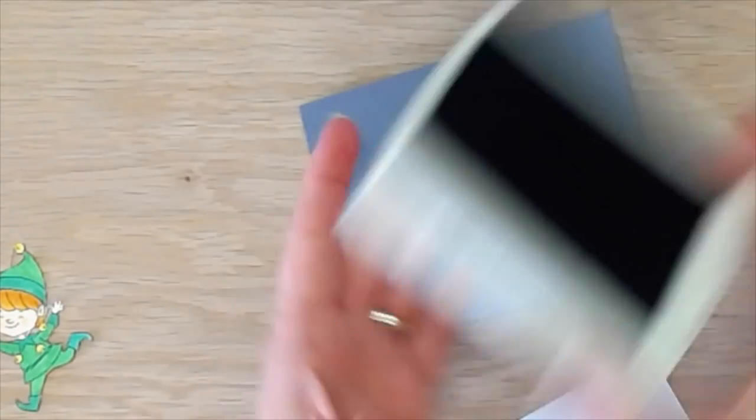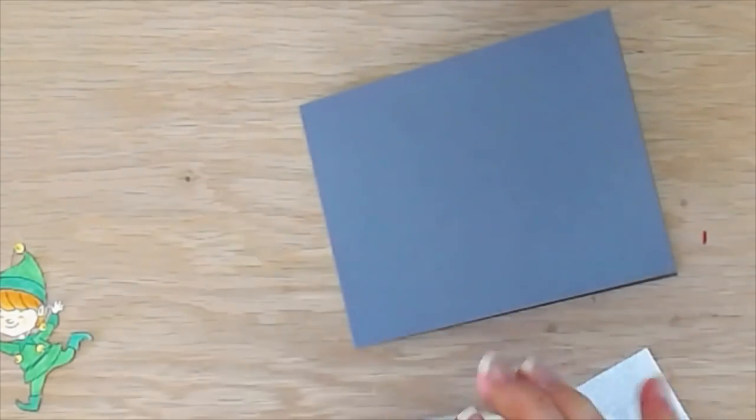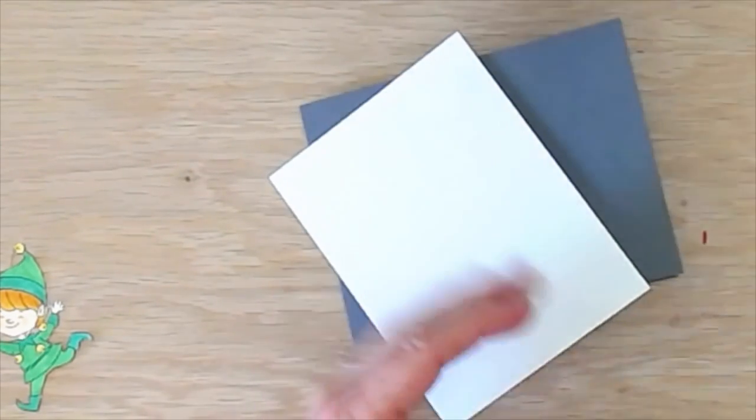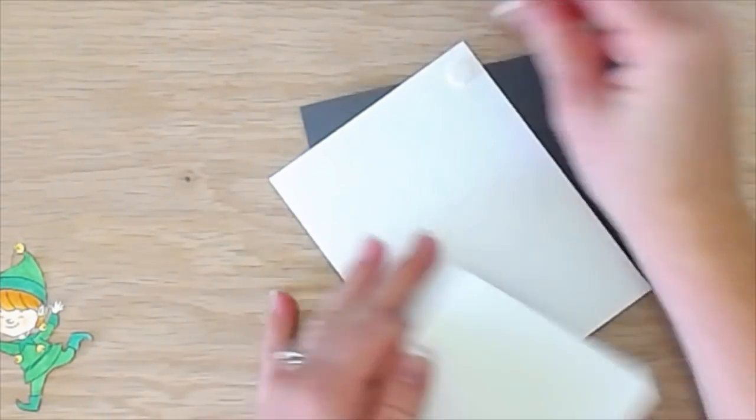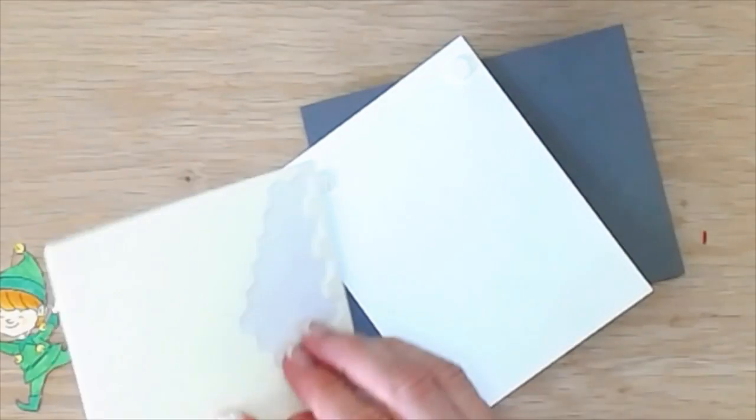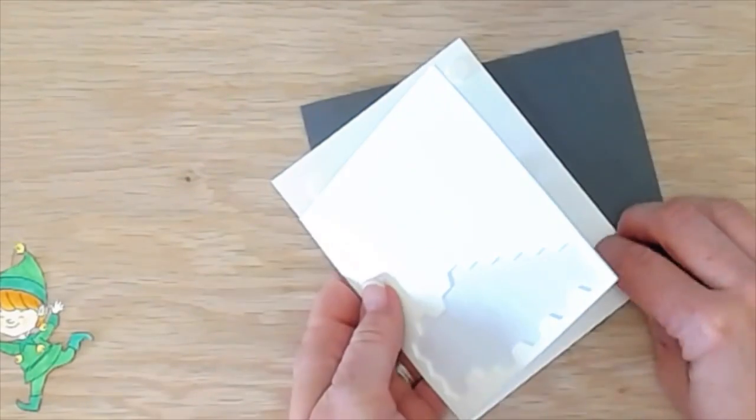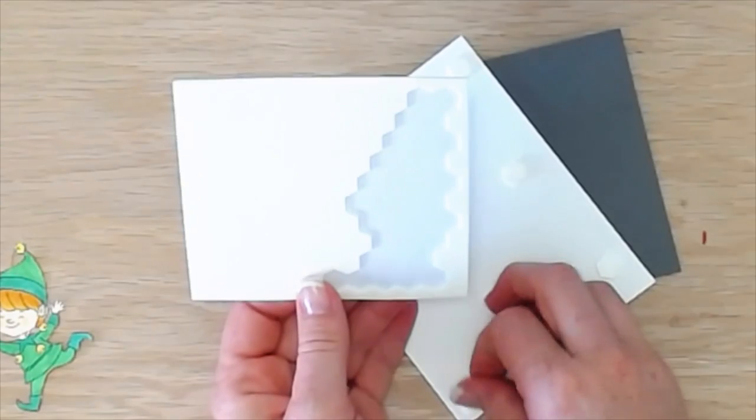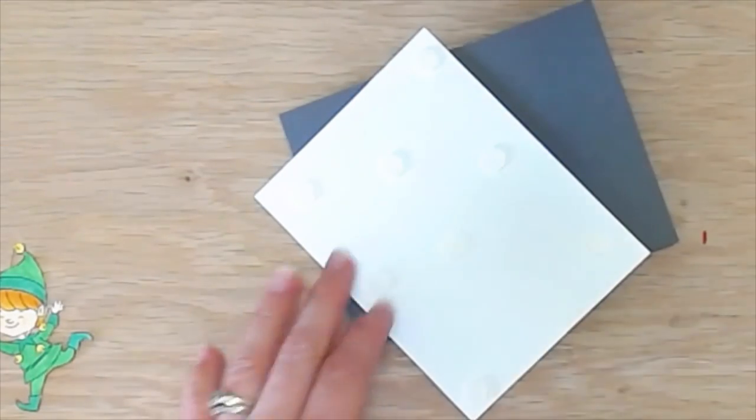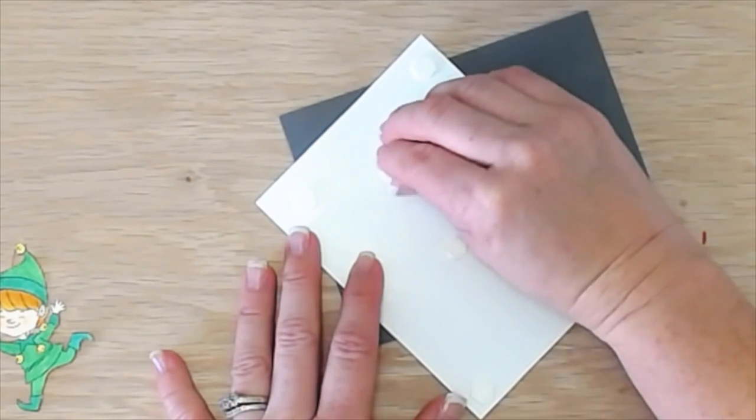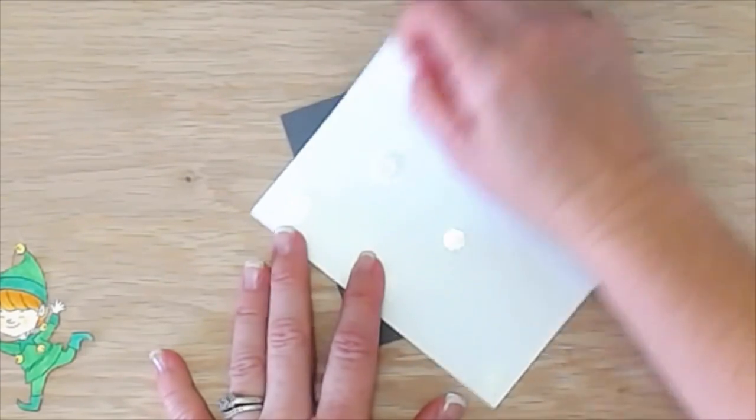And this is a piece of basic gray cardstock cut at 11 by four and a quarter. And to put it on our card base, this piece on our card base, I'm going to use some dimensionals because I want it to pop up and have dimension. I don't want it to be flat on the card, but you could put it on flat if you wanted to.